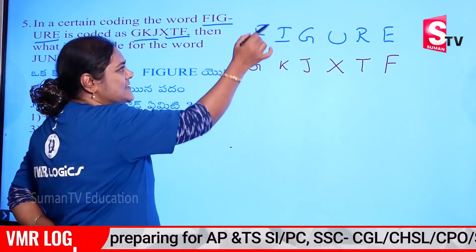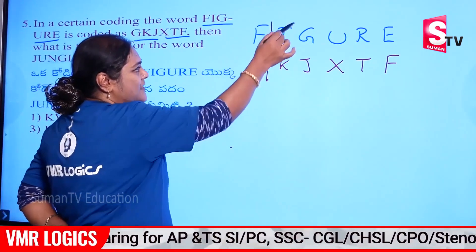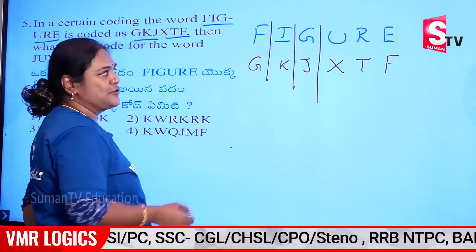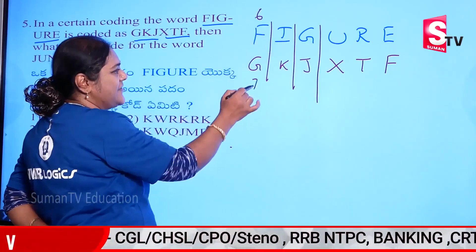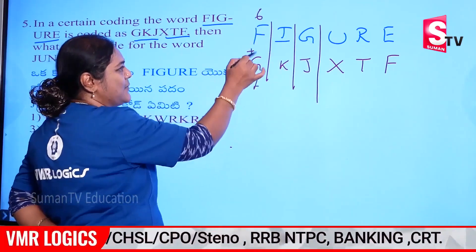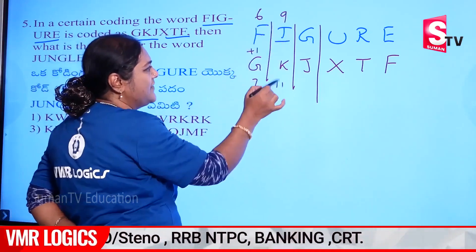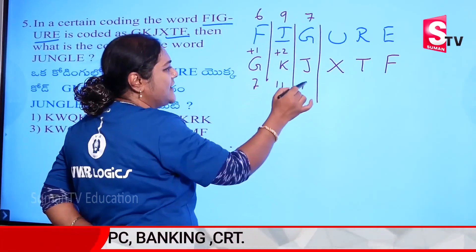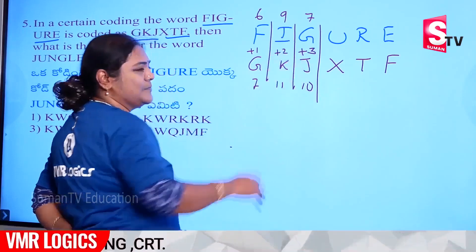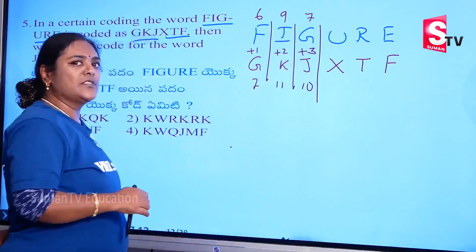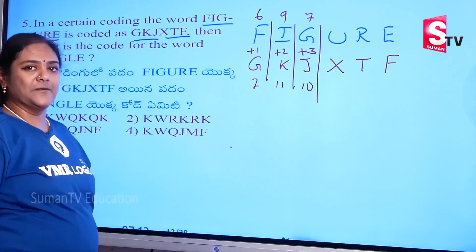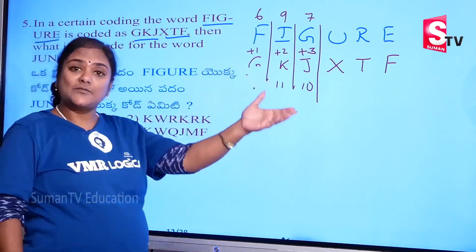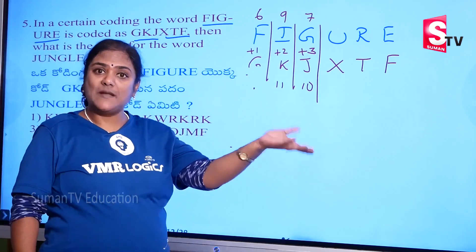Now, if we have opposites, we have to go. Now, place values: 6 and 7 — plus 1; 9 and 11 — plus 2; 7 and 10 — plus 3. Now I'm going to add logic. I'm going to add 3 letters: plus 1, plus 2, plus 3.